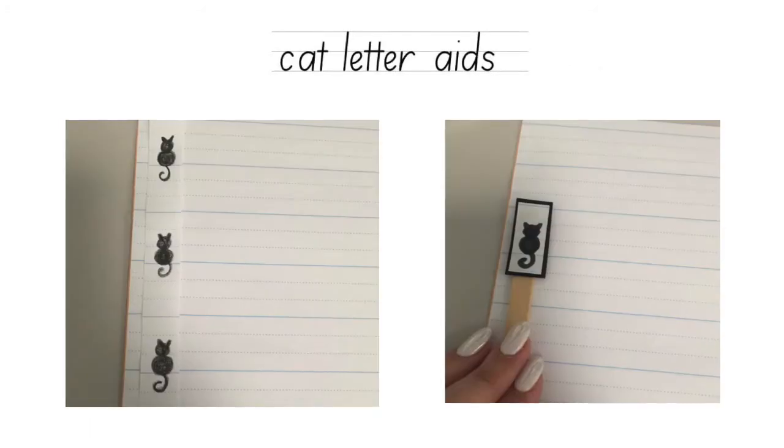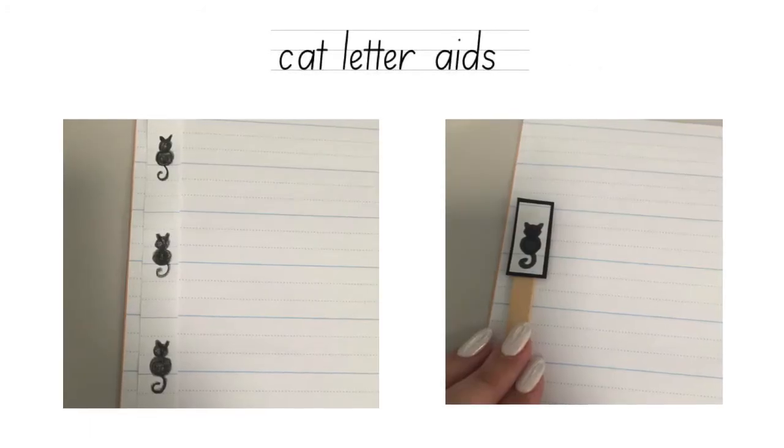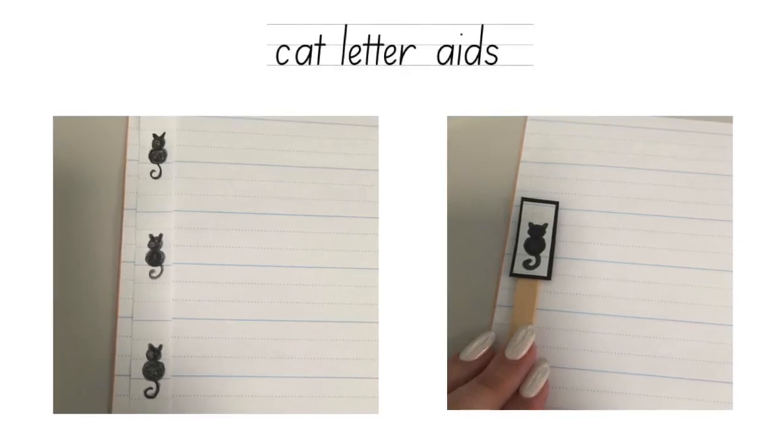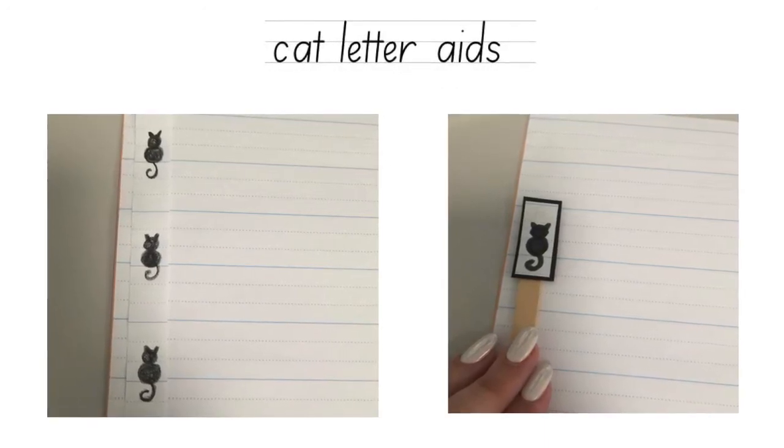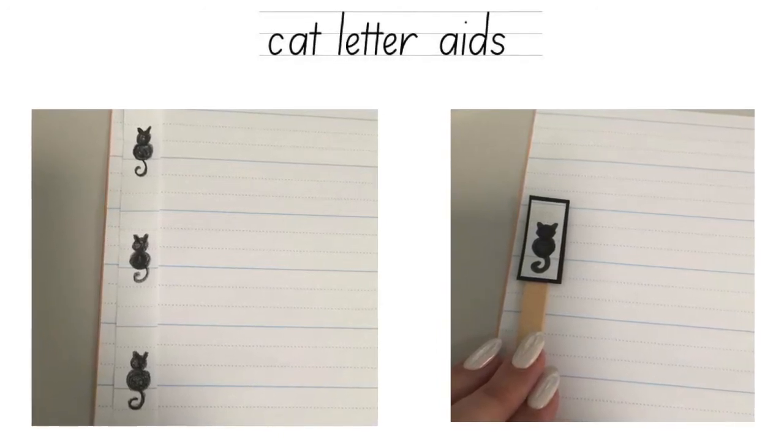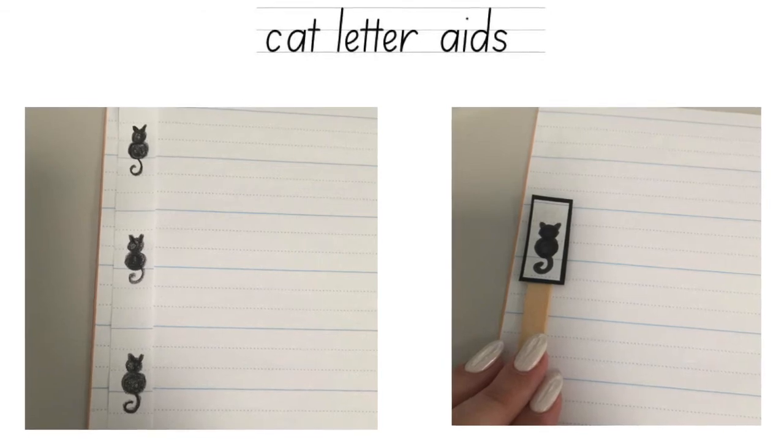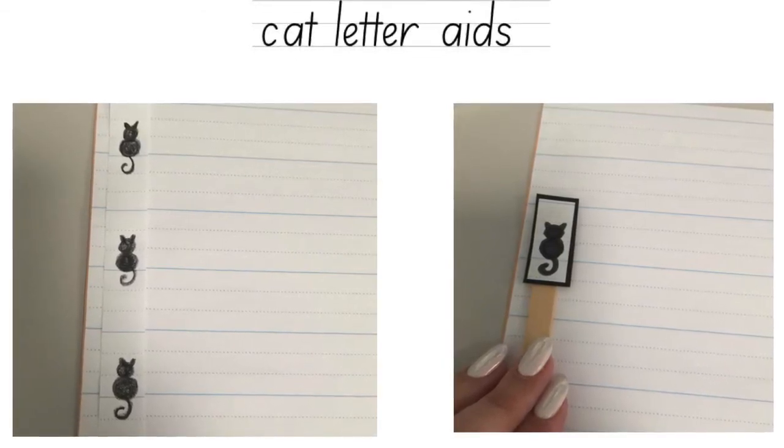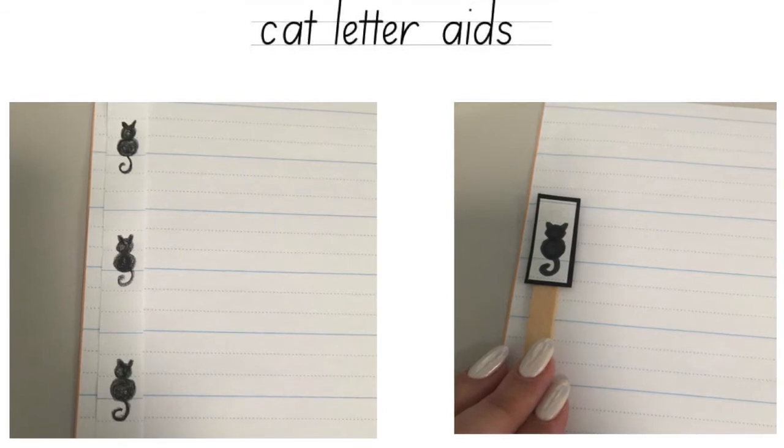Once you're getting to the writing activities, it can be beneficial to have a cat letter aid. An example is a laminated ruler of lined pages with the cat drawn on it, which could be added at the beginning of every page, or a cat popsicle stick, which is a popular and fun way to help familiarize students with where to place their letters.